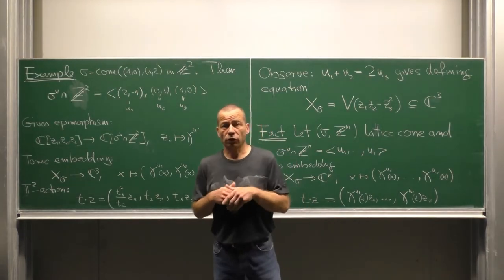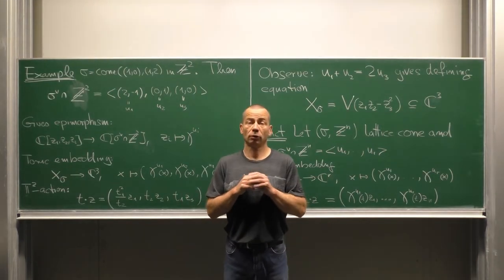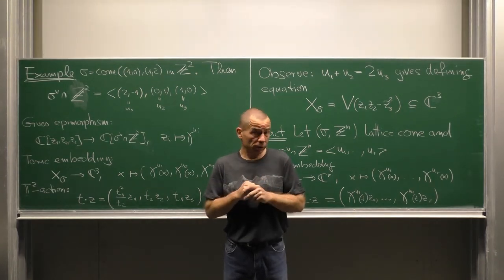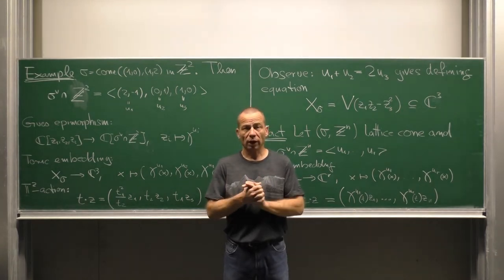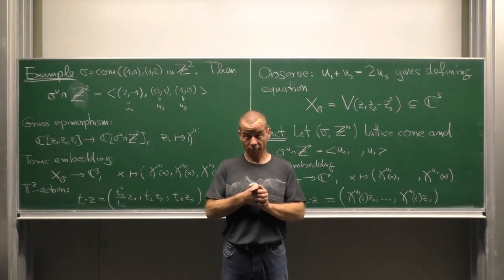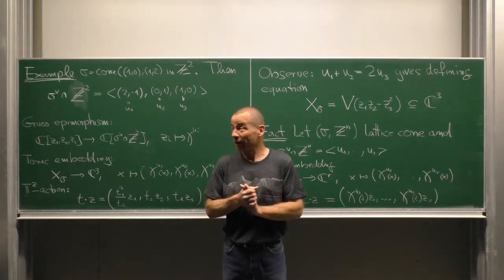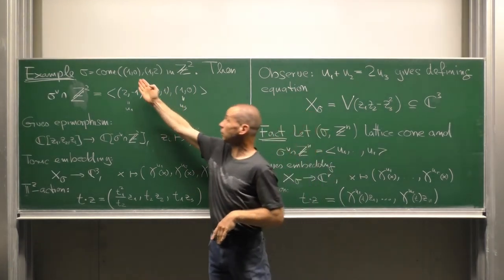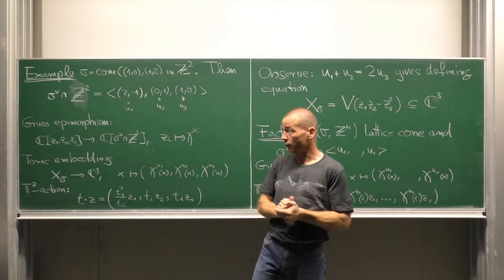The way we constructed our affine torus variety out of a given lattice cone is maybe a bit abstract. We want to put hands on things. Let us see how this can be done. Here is an example. Consider again the cone sigma generated by the vectors (1,0) and (1,2) in Z^2.